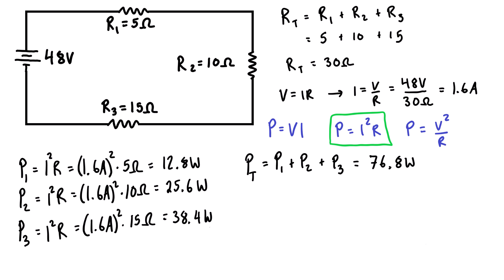In a circuit, total power consumed equals total power supplied, so we should verify. At the source, we know the voltage is 48 volts and the current is 1.6 amps, so we apply P equals VI. The total power supplied equals VT times IT: 48 volts times 1.6 amps equals 76.8 watts — matching our consumed power, which is a great confirmation check.